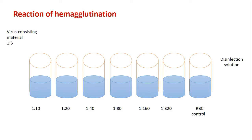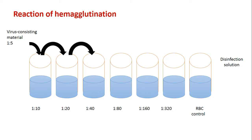After that, we dilute the virus-containing material. The original concentration of virus-containing material is 1 to 5, and we start to dilute it, halving each new dilution. The first tube is 1 to 10, then 1 to 20, 1 to 40, 1 to 80, 1 to 160, 1 to 320, and we exclude the RBC control.